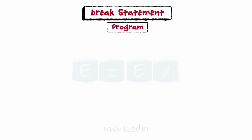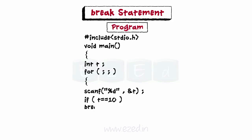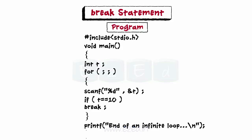Let's see how break works and how it is implemented in programs. We start by declaring a main function and defining its scope. Then we declare the variable named t. A for loop is used to loop infinitely till the user enters 10. If the user enters 10, then the loop breaks and the control is transferred to the next statement after the loop. The last statement is a printf statement to display a text.